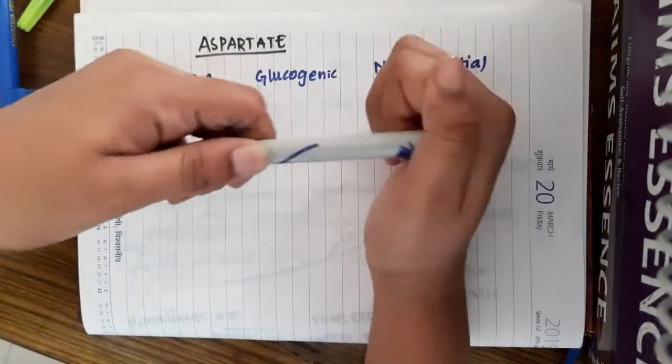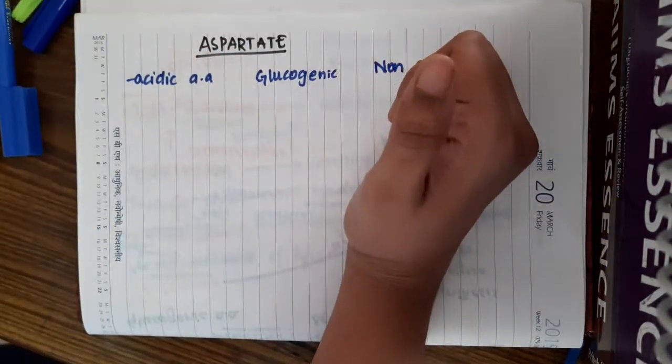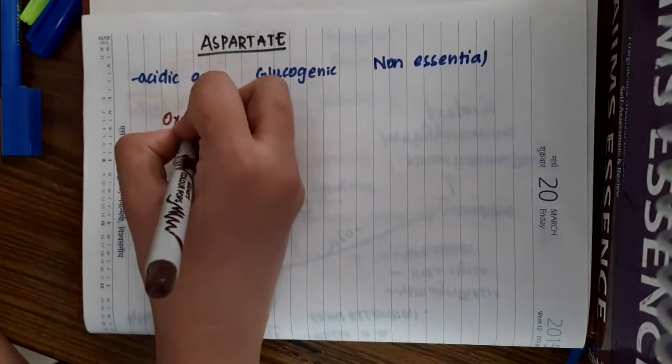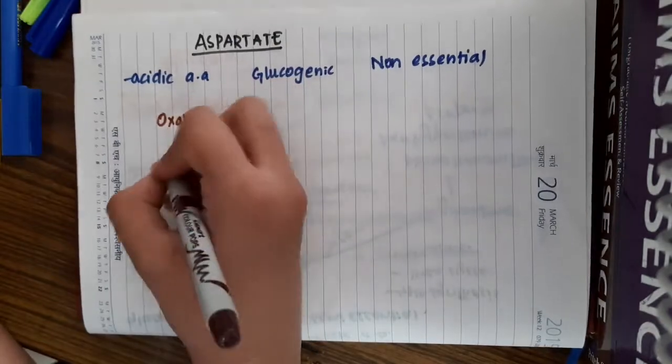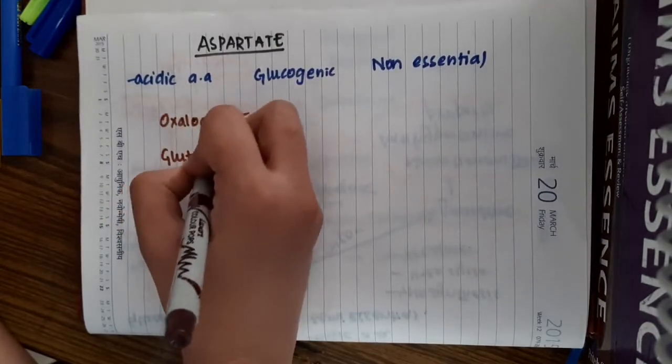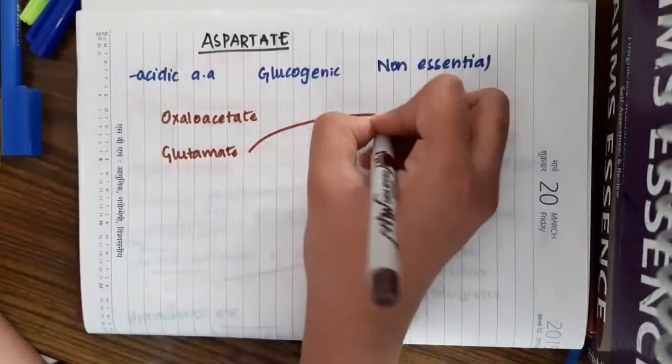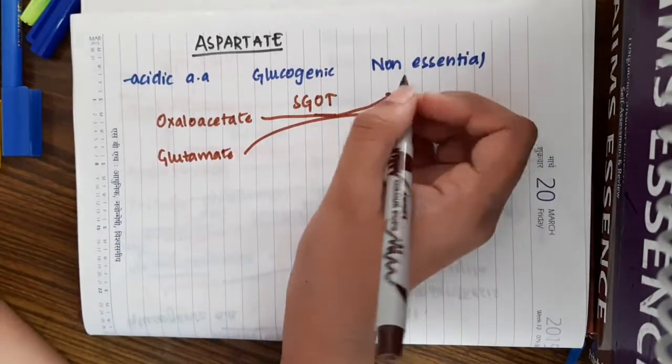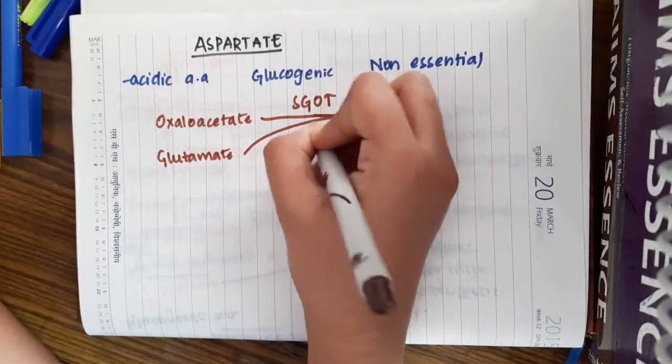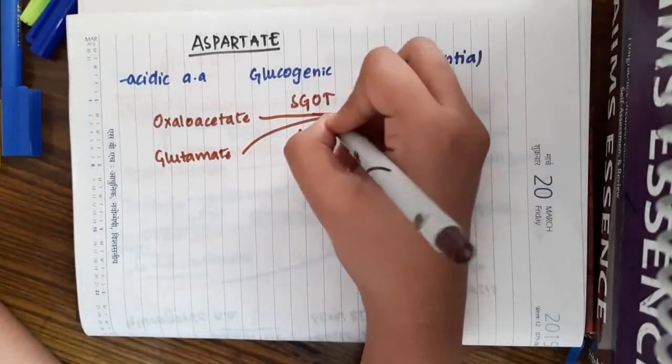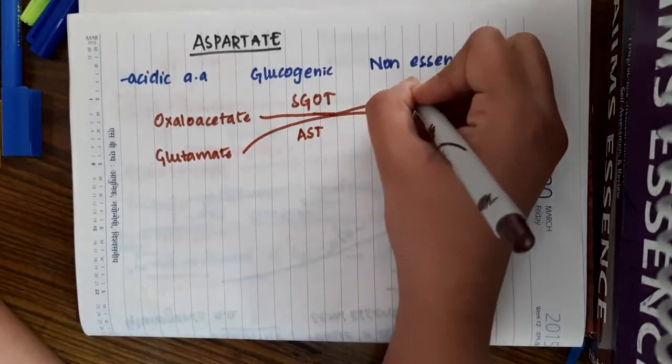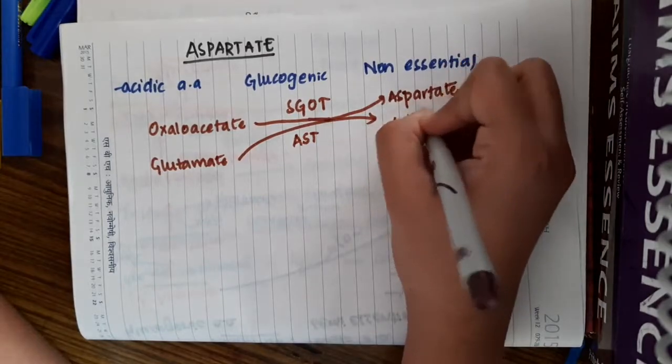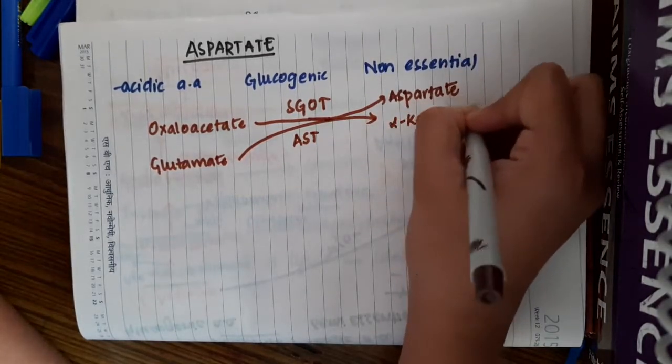So how are you going to synthesize this aspartate? Aspartate is synthesized by oxaloacetate combining with glutamate. In the presence of the enzyme serum glutamate oxaloacetate transaminase or aspartate transaminase, oxaloacetate converts itself into aspartate whereas glutamate converts itself to alpha-ketoglutarate.